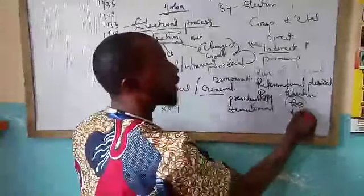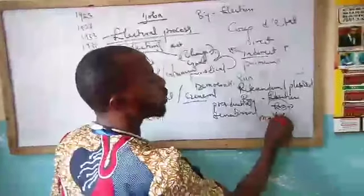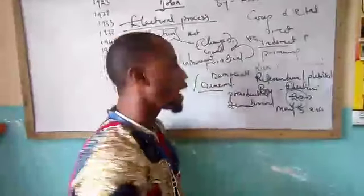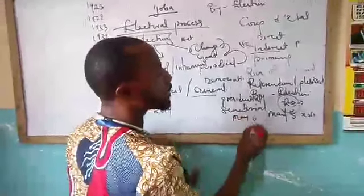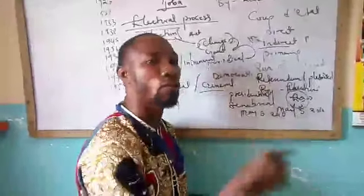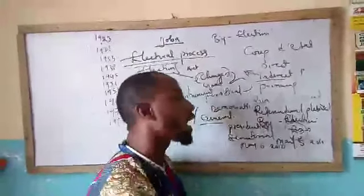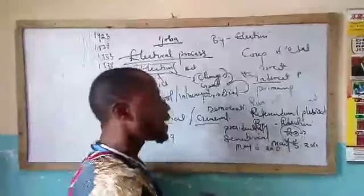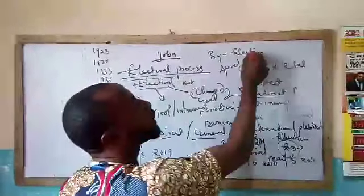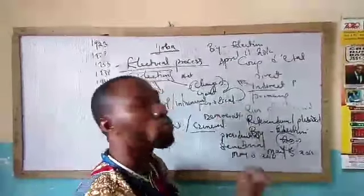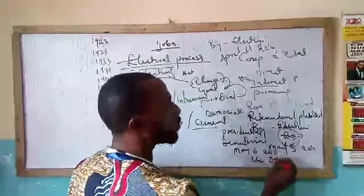If a president dies, the vice president shall become the president. For example, when Yar'Adua died on the 5th of May 2010 at exactly 7:43 PM, Jonathan became the president — not acting president — on the 6th of May 2010 at exactly 8 AM. Jonathan had already been acting president before Yar'Adua's death.